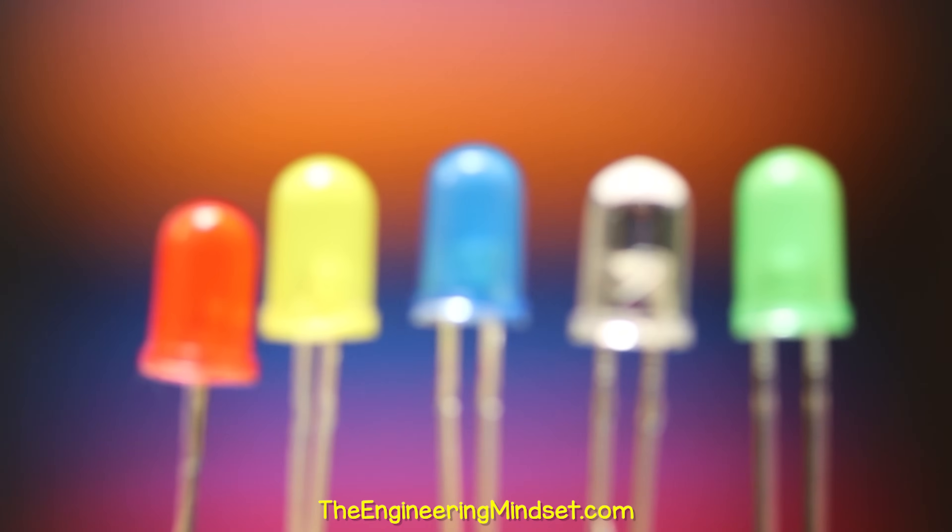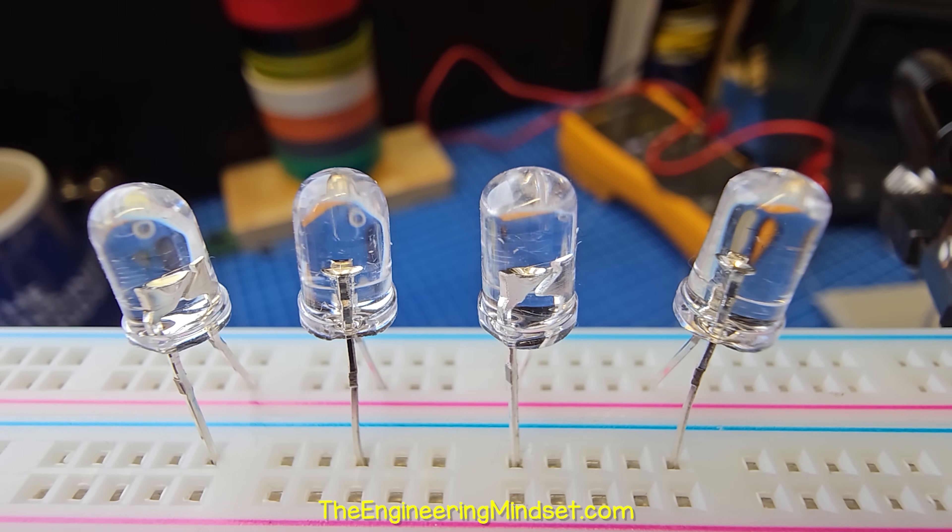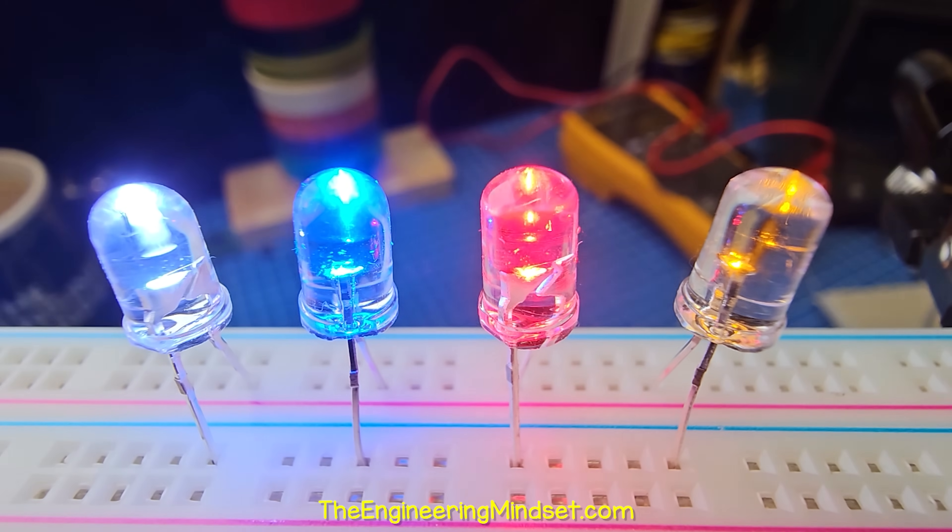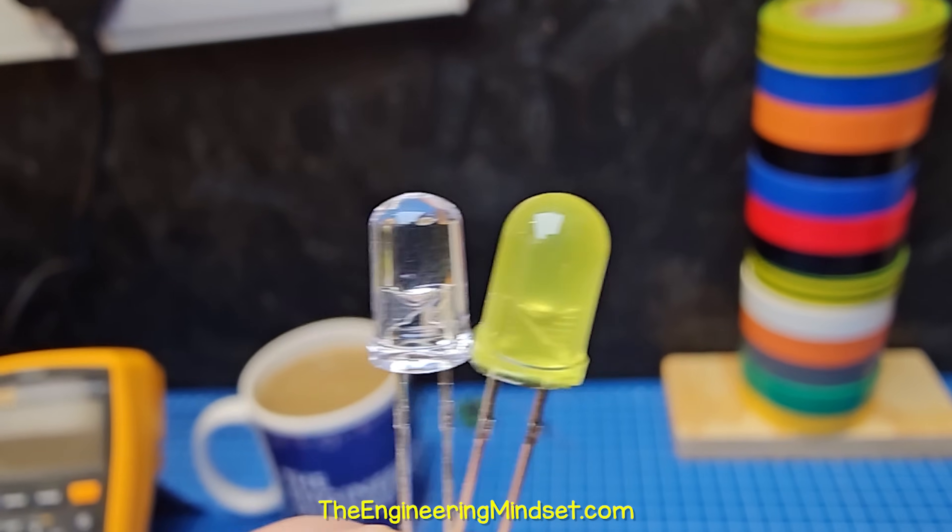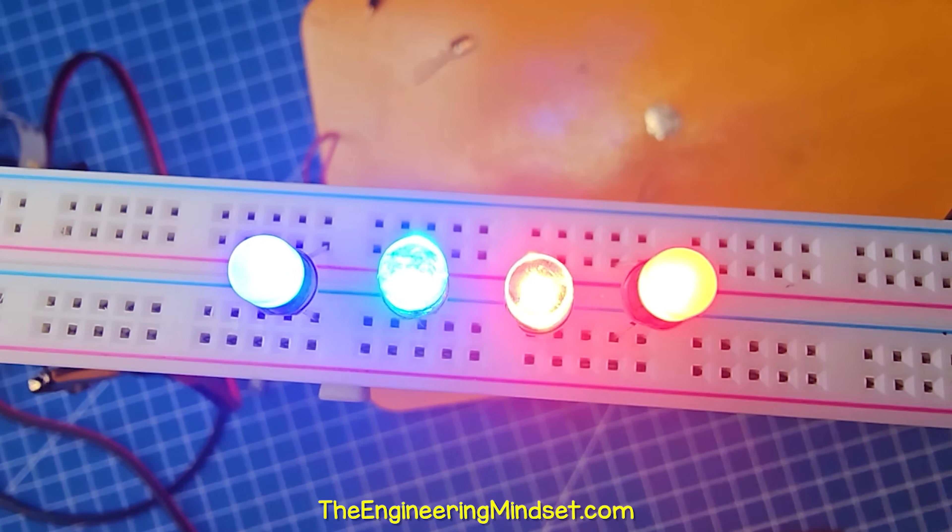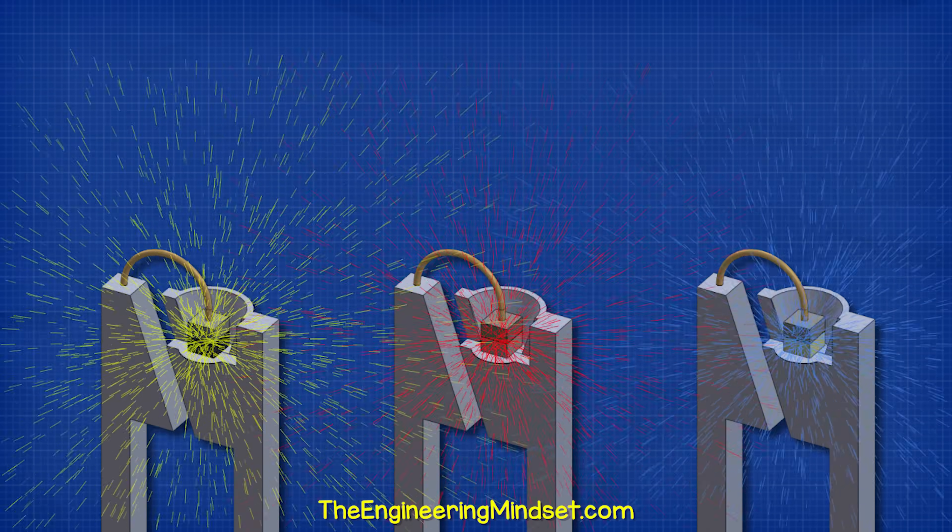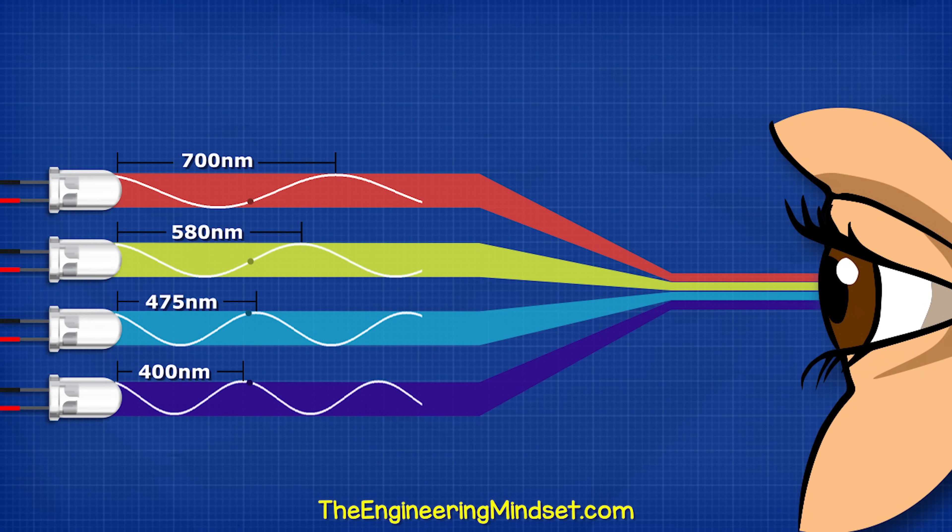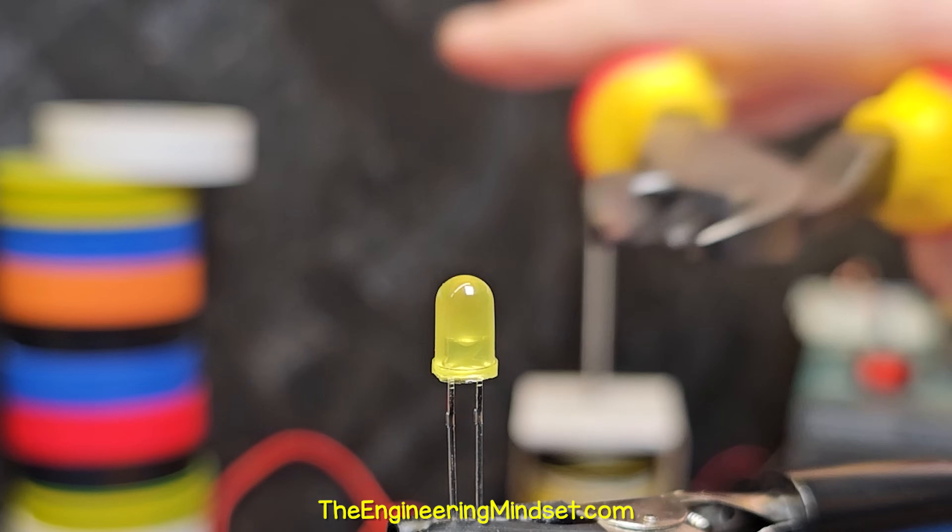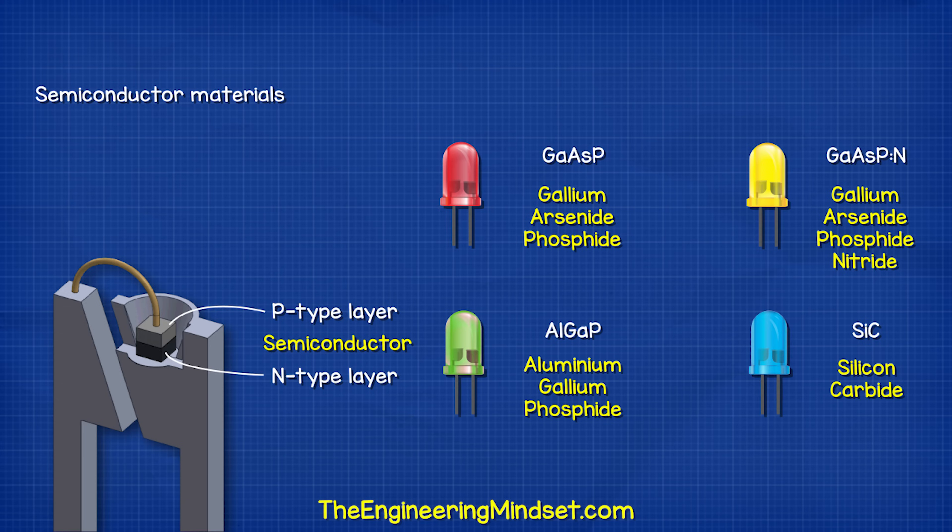LEDs come in various different color lenses, but we can also get transparent versions which emit different color lights too. The cases are only colored to make it easy for us to tell what color light will be produced. It's actually just the material inside the semiconductor layer that produces the different colors of light and not the color of the case. We will learn how that works later on in this video.